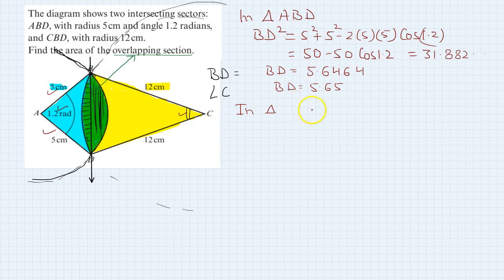In triangle BCD, cos theta equals 12 squared plus 12 squared minus 5.65 squared, divided by 2 times 12 times 12.